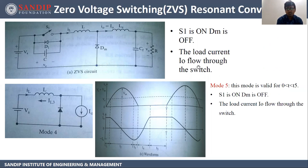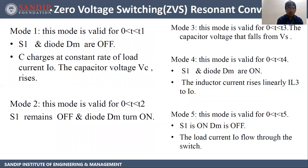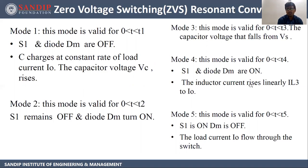We will see the operation of the ZVS circuit in detail, mode by mode. In Mode 1, valid for 0 to T1, S1 and diode DM are off; C charges at a constant rate of load current I0 and the capacitor voltage VC rises. In Mode 2, valid for 0 to T2, S1 remains off and diode DM turns on. Mode 3, valid for 0 to T3, the capacitor voltage falls from Vs. Mode 4, valid for 0 to T4, S1 and diode DM are on and inductor current rises linearly from IL3 to I0. Mode 5, valid for 0 to T5, S1 is on, DM is off, and load current I0 flows through the switch.